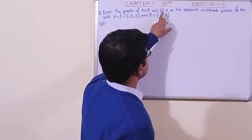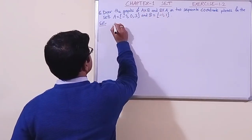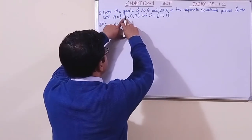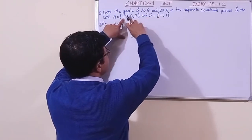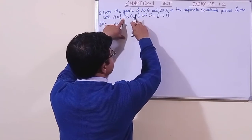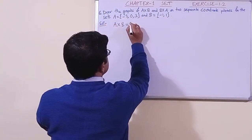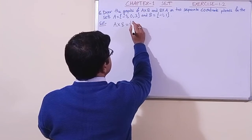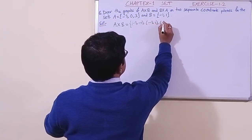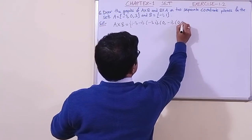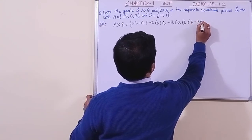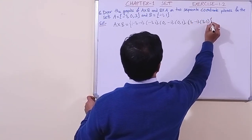First we shall find A cross B and B cross A. For A cross B, we make ordered pairs: minus 3 with minus 1, then minus 3 with 1, 0 with minus 1, then 0 with 1, 3 with minus 1, then 3 with plus 1. So the ordered pairs are: minus 3 minus 1, minus 3 one, 0 minus 1, 0 one, 3 minus 1, then 3 one.